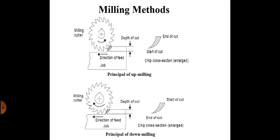In down milling, the chip thickness is maximum at the start of cut and minimum at the end of cut, as shown in the bottom figure. This is totally opposite to up milling.